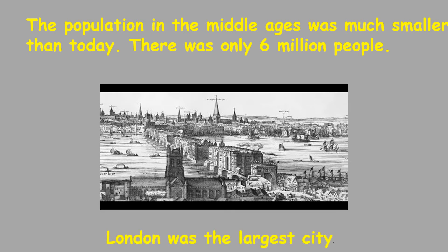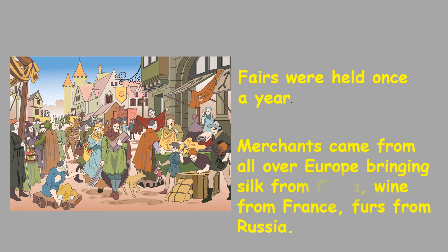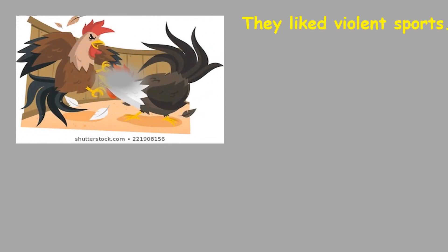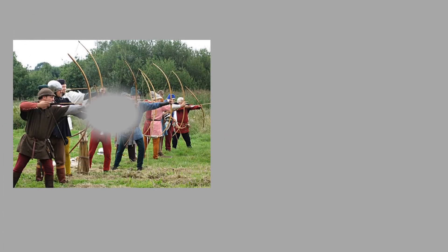London was the largest city. Fairs were held once a year, and merchants came from all over Europe bringing silk from China, wine from France, furs from Russia. And they liked violent sports, such as cockfighting, bear baiting, or archery.